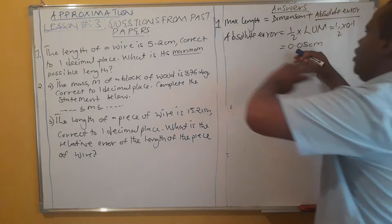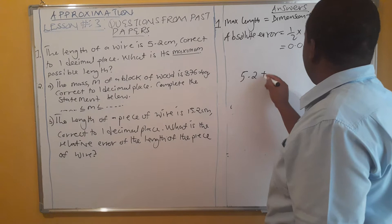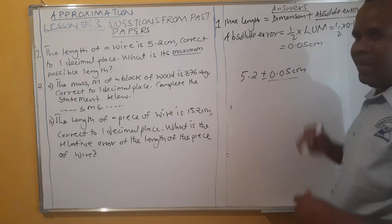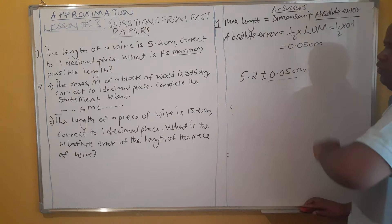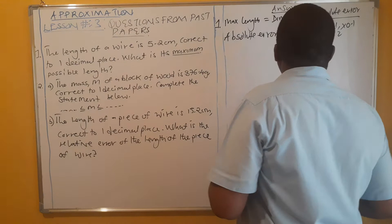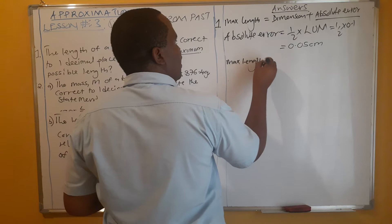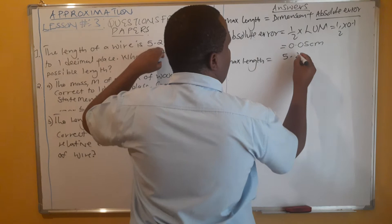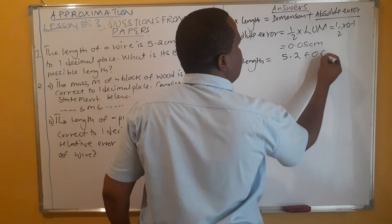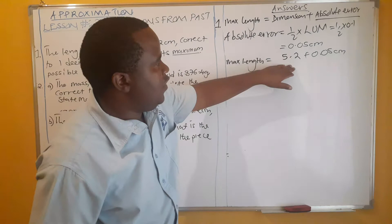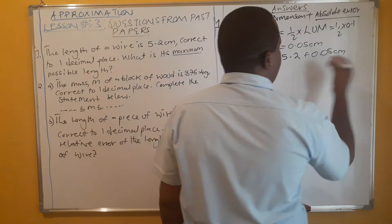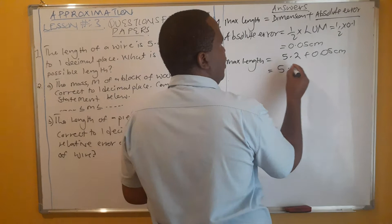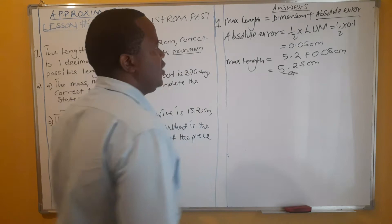So this is our absolute error, and we add it to the dimension. Sometimes they will give you something like plus or minus 0.05 centimeters, which means the question has already created the absolute error for you. You just add to find the upper limit, or subtract to find the lower limit. So our maximum length equals 5.2 plus 0.05 centimeters, which gives us 5.25 centimeters.